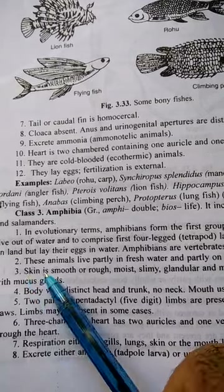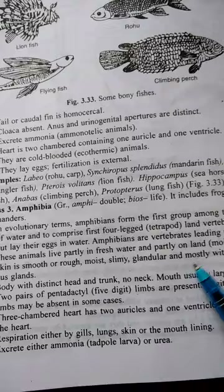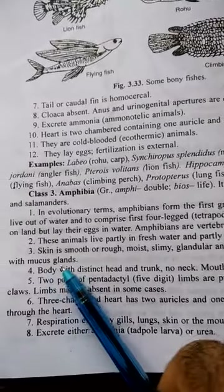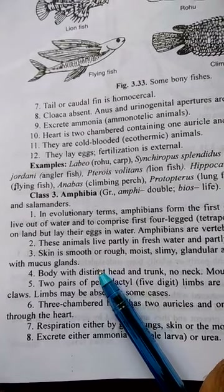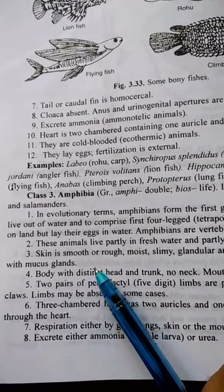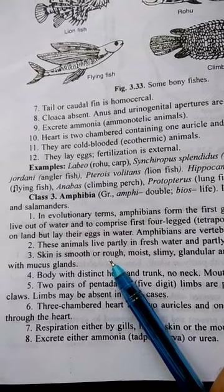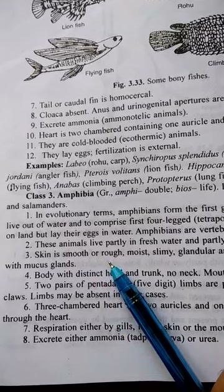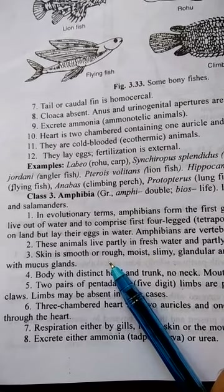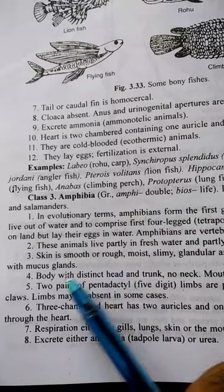Point number three: skin is smooth or rough, moist, slimy, glandular and mostly without scales. The skin has mucus glands. The skin is very moist, like that of the body of the frog, salamander, and similar animals. The body is very smooth and slippery.